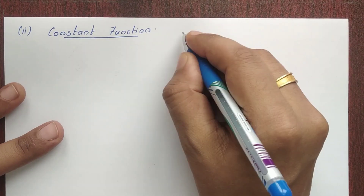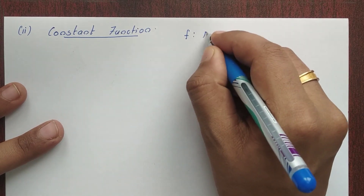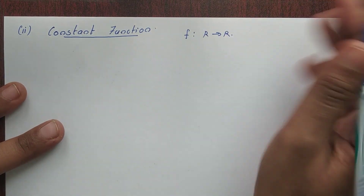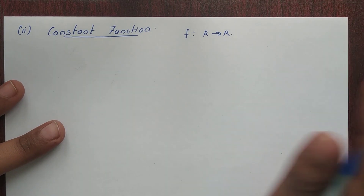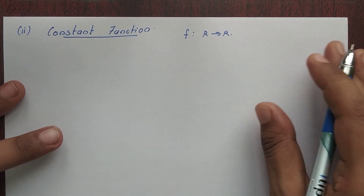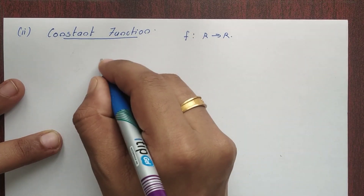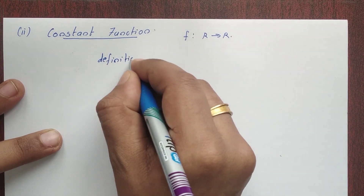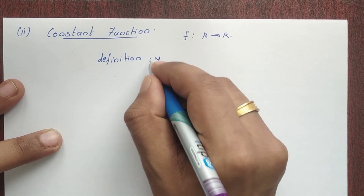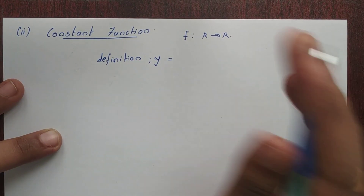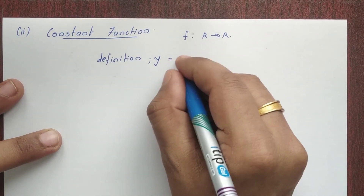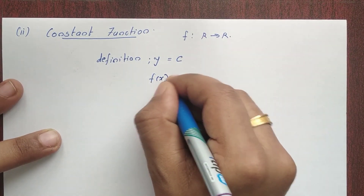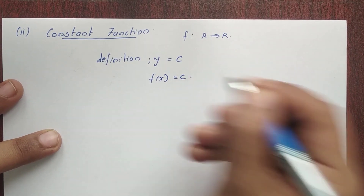Next is the constant function. The constant function is defined from R to R, over the real numbers. The definition is: y is equal to a constant, that is f(x) = c, where x belongs to R.